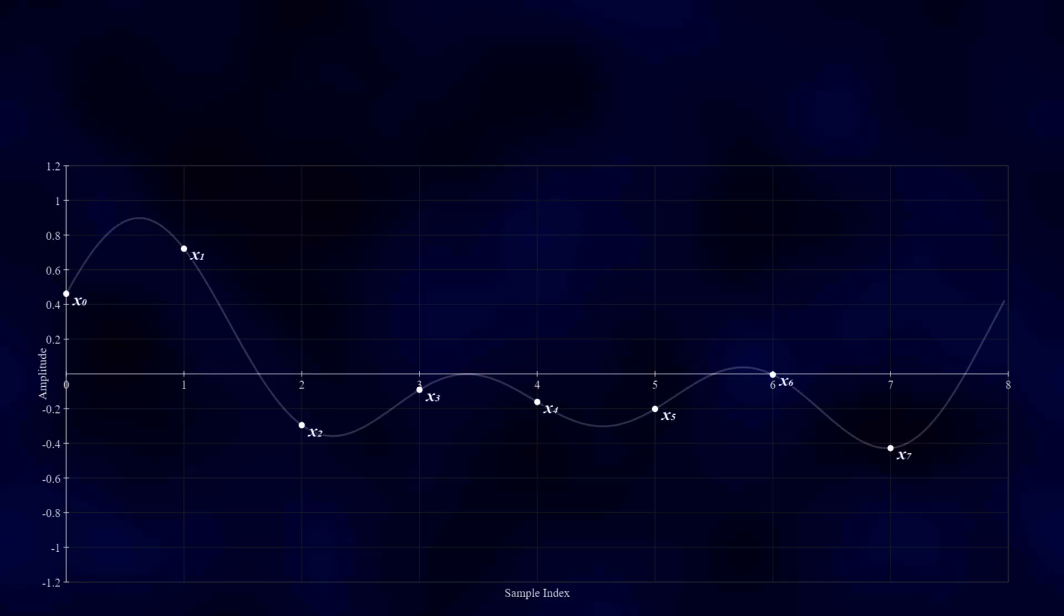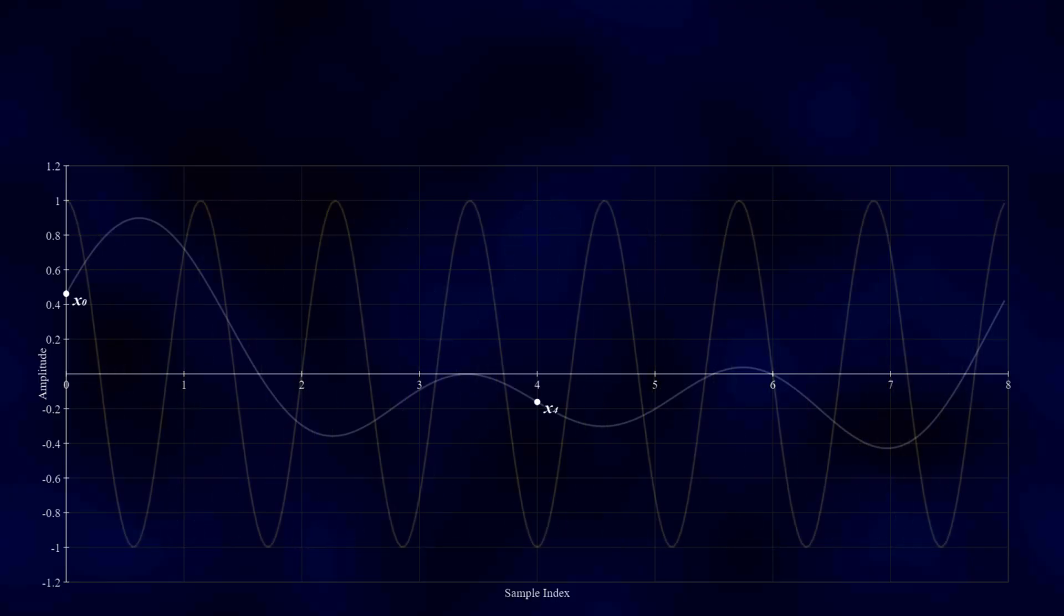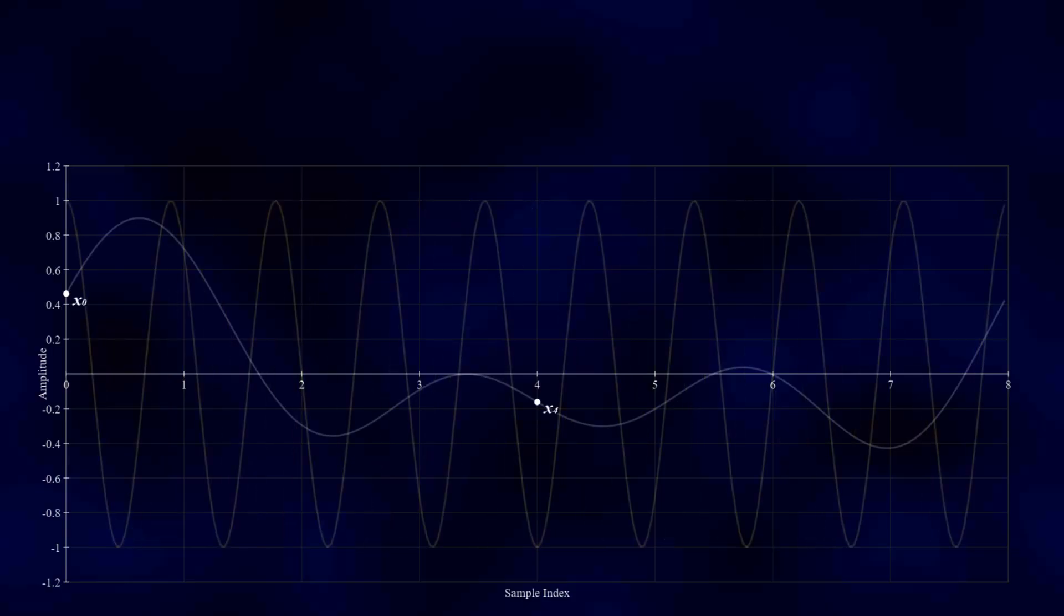In a two-point DFT we are dealing with only two samples, which means there are only two frequencies we can test, zero and one. This is because the DFT only analyzes frequencies for which the sines and cosines it uses complete whole cycles within the period of the signal.